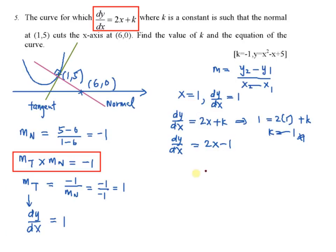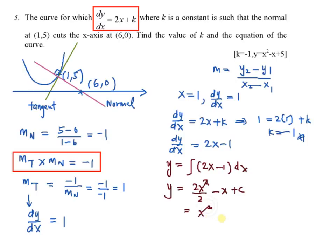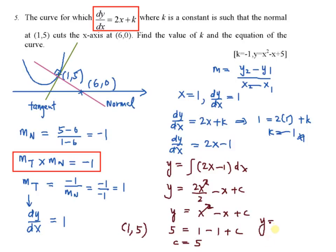I can proceed to find the equation of the curve by integrating dy/dx, that is the integral of (2x minus 1) dx. So: 2x squared over 2 minus x plus c, which simplifies to x squared minus x plus c. Always remember there is a plus c. Now substitute a point on the curve — you can substitute (1, 5); you can't substitute (6, 0) because (6, 0) is not on this curve. So substituting (1, 5): 5 equals 1 squared minus 1 plus c, therefore c equals 5. The equation of the curve is y equals x squared minus x plus 5.